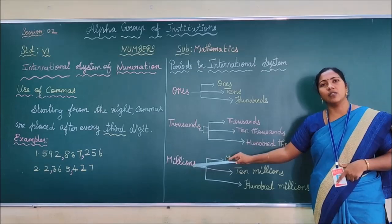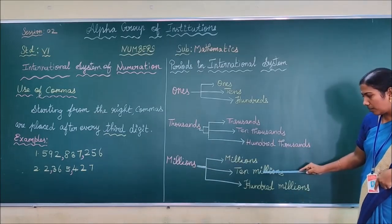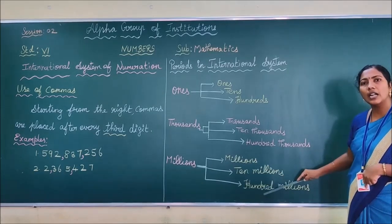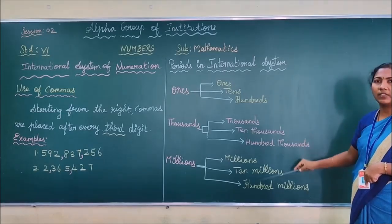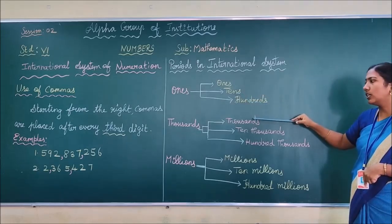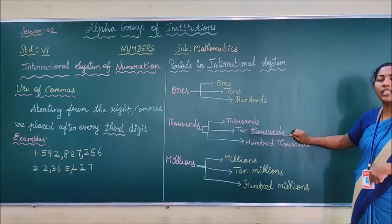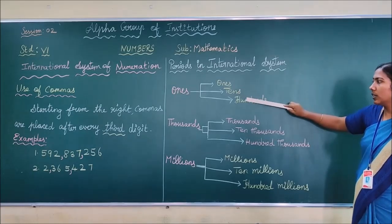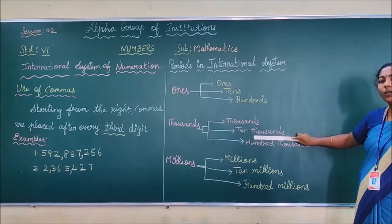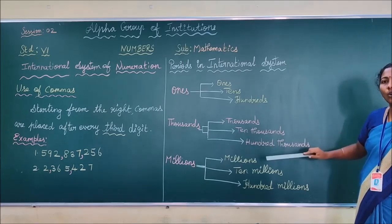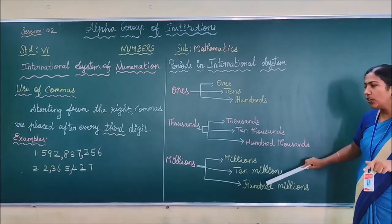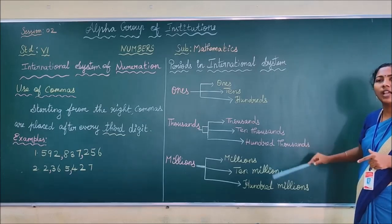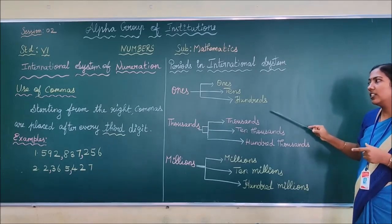The next period is millions. What are the place values under millions? Millions, ten millions, hundred millions. So in all you have nine place values: ones, tens, hundreds, thousands, ten thousands, hundred thousands, millions, ten millions, hundred millions. Up to ten thousands, you have the same place values as in the Indian system. After ten thousands, in Indian you have lakhs, ten lakhs, crores, ten crores — but in international you have hundred thousands, millions, ten millions, hundred millions.